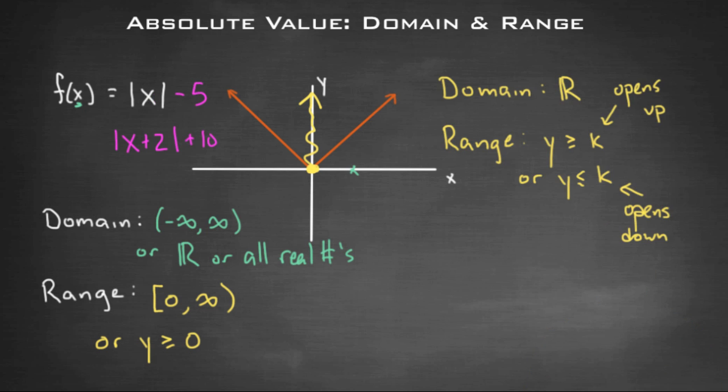Well, here's typically what will happen. The domain, regardless, will be all real numbers. Because think about it, if you take a V-shaped graph that extends out in both directions, the x values go to the left and to the right forever. Even if you shift the graph a little bit left to right, it still goes out left and right forever. And so the domain will continue to be all real numbers.